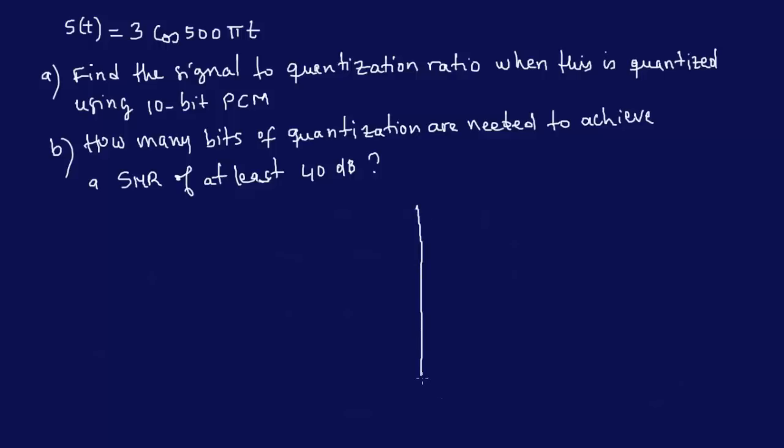How many bits of quantization are needed to achieve an SNR of at least 40 dB? Now typically the questions in the FE are not going to be two questions at all, it's just either A or B. So this is basically two problems we could call it two problems. So now let's go ahead and solve this.